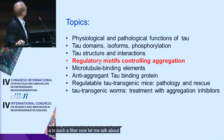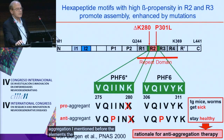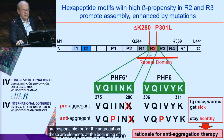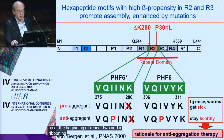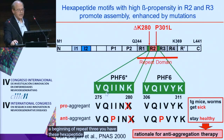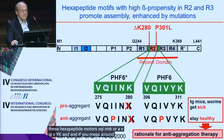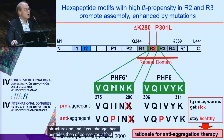Now let me talk about the regular motifs for controlling aggregation. The hexapeptide motifs responsible for aggregation are elements at the beginning of repeat R2 and repeat R3 — specifically VQIRNK and VQIVYK. These have an enhanced potential for beta structure, and if you change these peptides, you affect aggregation.